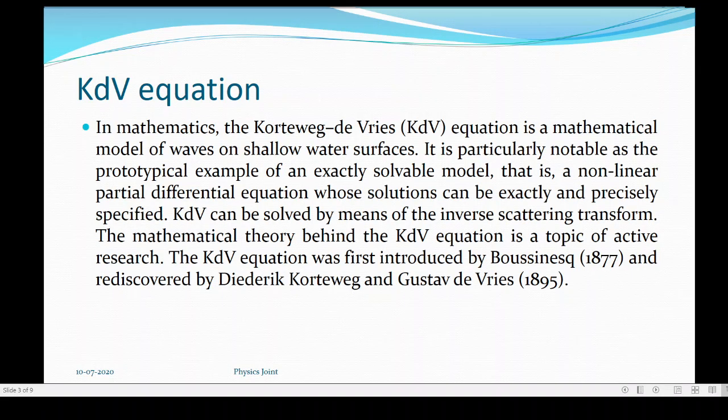Well, the KdV equation, or better known as the Korteweg-de Vries equation, is a mathematical model of waves on shallow water surfaces. It was first observed by Russell and later observed by Boussinesq, and later the mathematical expression was given by Korteweg and Gustav de Vries. They were both Dutch mathematicians.